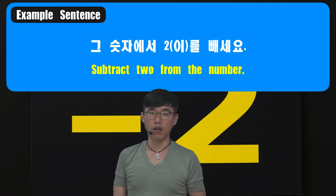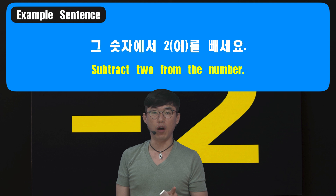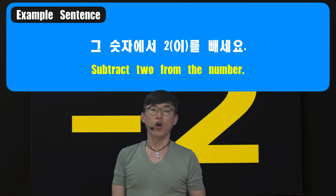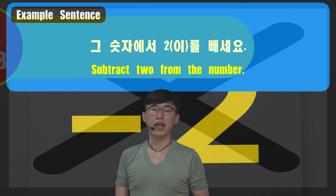Number 47 is 빼다, which means 'to subtract.' 그 숫자에서 2를 빼세요. 그 is 'the,' 숫자 is 'number,' and 에서 is 'from.' Replacing 다 with 세요 makes it an imperative sentence. So: Subtract 2 from the number.